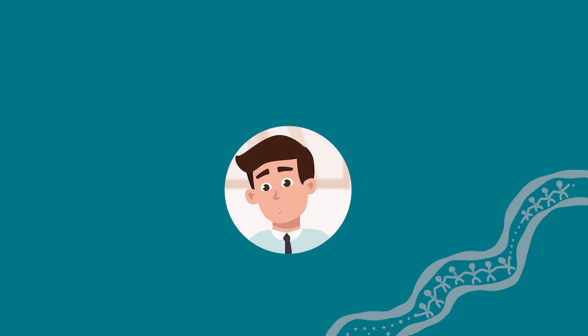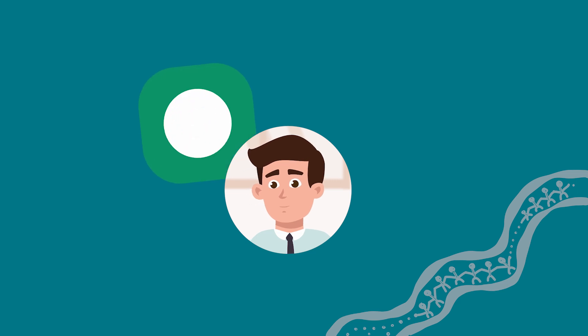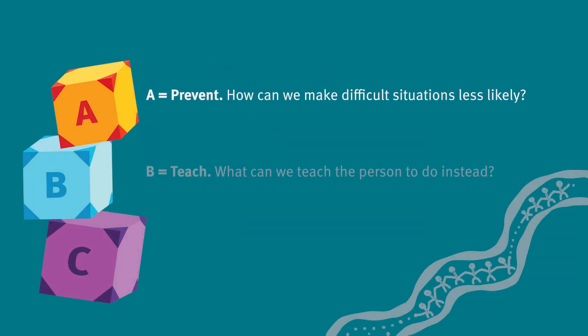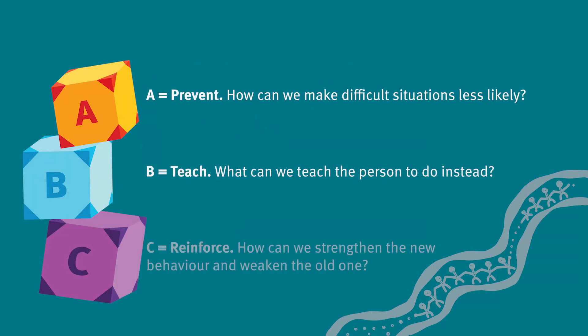Working out the ABC helps identify the function or reason for the behaviour — what is the student getting or avoiding as a result of the behaviour? Once we work out the ABC and the function of the behaviour, we can provide support to help the person use a different behaviour that will help them to be successful.